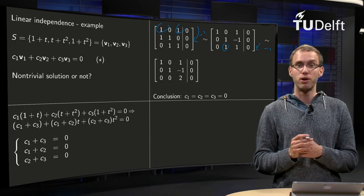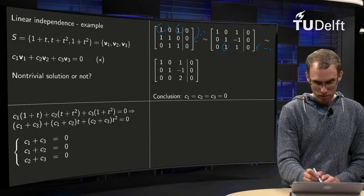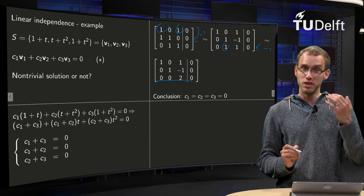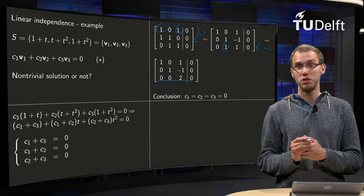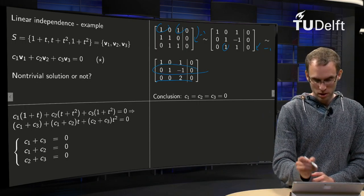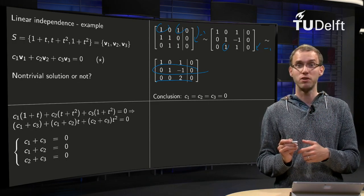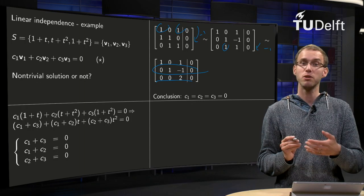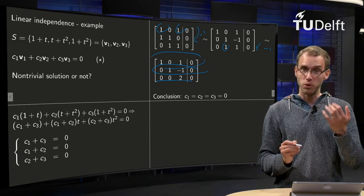Well, we don't have to do further row reduction, because you can see the solution now. The last row over here gives you 0 times c1 plus 0 times c2 plus 2 times c3 equals zero, so c3 equals zero. Then the second row gives you 0 times c1 plus 1 times c2 minus c3 equals zero, but c3 was already zero, so c2 has to be zero. And the first row will tell you that c1 equals zero.